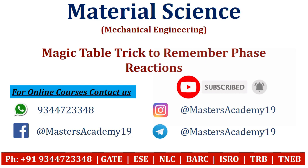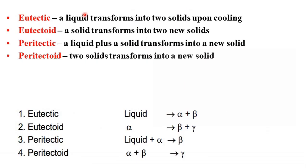These are the four reactions which generally happen in phase diagrams: eutectic, eutectoid, peritectic, and peritectoid. In simple terms: a liquid transforms into two solids upon cooling — liquid giving alpha plus beta. Eutectoid: a solid transforms into two new solids — alpha giving beta plus gamma. Peritectic: a liquid plus solid transforms into a new solid — liquid plus alpha giving beta. Peritectoid: two solids transform into a new solid — alpha plus beta gives gamma.